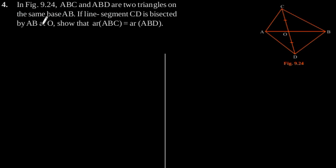Exercise 9.3, Question number 4. In figure 9.24, ABC and ABD are two triangles on the same base AB. If line segment CD is bisected by AB at O, show that area of triangle ABC is equal to area of triangle ABD.